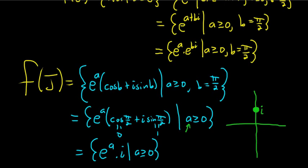The smallest a can be is 0. So if that's the case, you get e to the 0 times i, so you simply get i. After that, a is positive, so you get e to the a, where a is positive, times i.